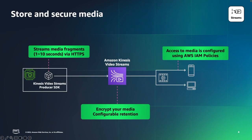On a stream-by-stream basis, you have the ability to set encryption and retention settings. Retention controls how long media is stored in Kinesis Video Streams, and the range of valid values is between zero hours all the way up to seven years of storage. Just like most other AWS services, access to the service — including how to obtain media stored in Kinesis Video Streams — is controlled through AWS Identity and Access Management policies. A stream is very commonly one-to-one with camera devices, so per camera you would have one named stream with its own configured retention and encryption, controlled through AWS IAM policies via ARNs.